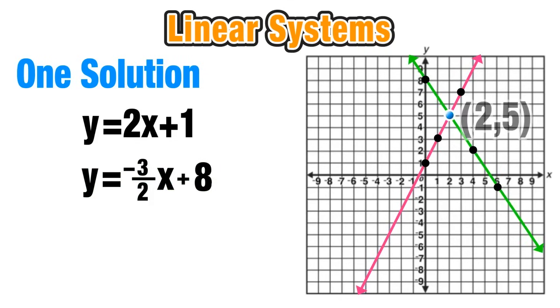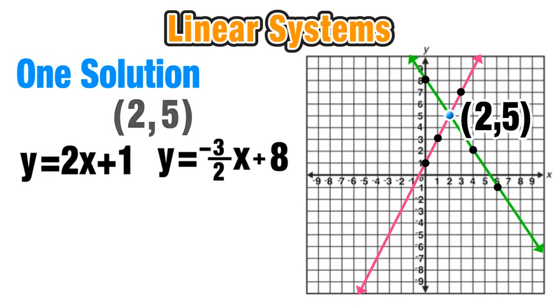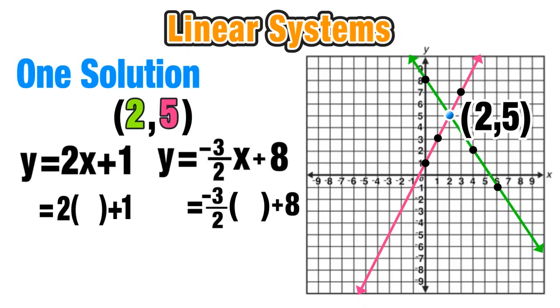Now that intersection point with coordinates at 2, 5 is our one and only solution to this linear system. And we can go ahead and quickly verify this algebraically. Using the coordinates of the solution at 2, 5, we're going to substitute x and y for those x coordinates and y coordinates. So we'll replace the x's with 2's and the y's with 5's and then go ahead and solve and see if this checks out.